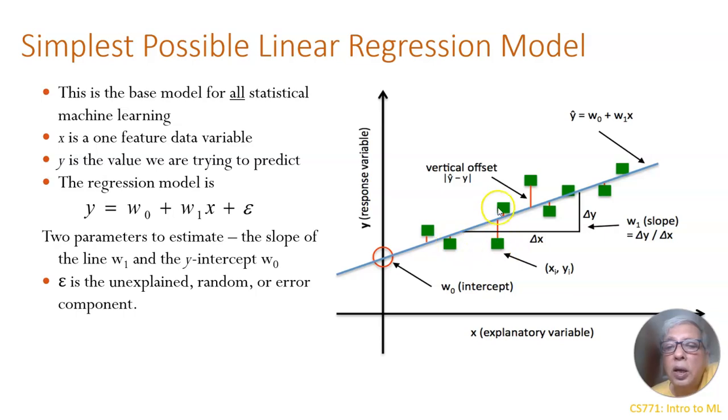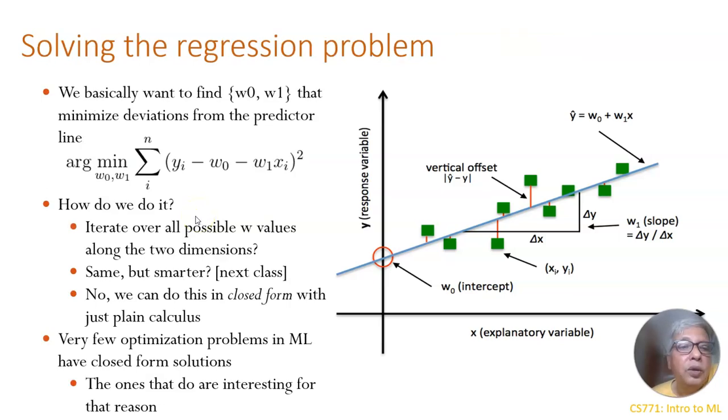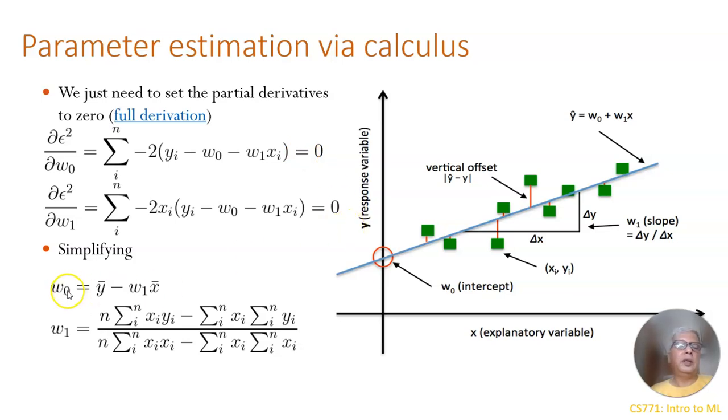So these green dots are the actual data. This blue line is the fitted line, the least square line or the best linear regression line, and these vertical distances are the errors. Okay, so we would like to fit a line y equal to w0 plus w1x plus error. From the data we will try to estimate the values of w0 and w1. This is learning from data to get the best prediction line or the prediction plane.